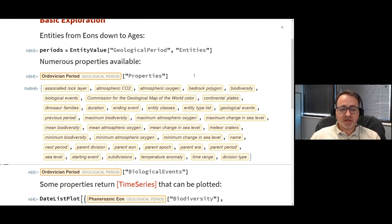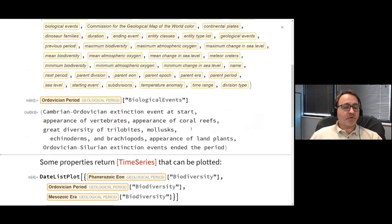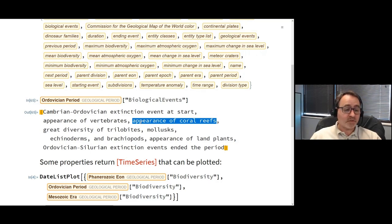Within this domain, we've got a number of properties. Everything from textual descriptions of things that happened. For example, biological events. During the Ordovician period, at the very beginning you had the Cambrian Ordovician extinction event, the appearance of some of the first vertebrates, the appearance of coral reefs. It was also ended by another mass extinction.